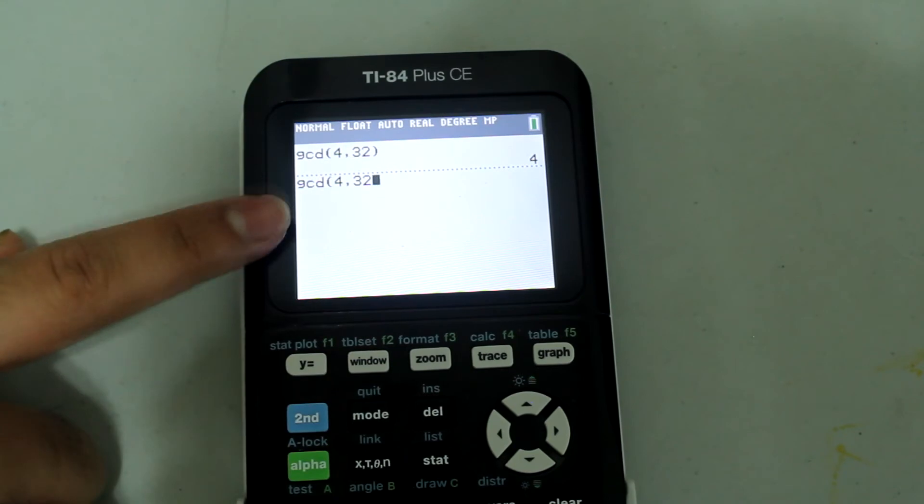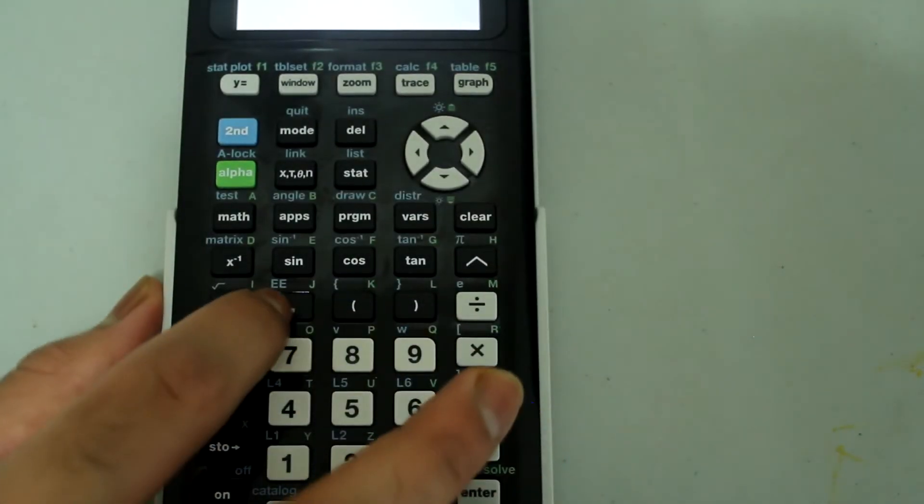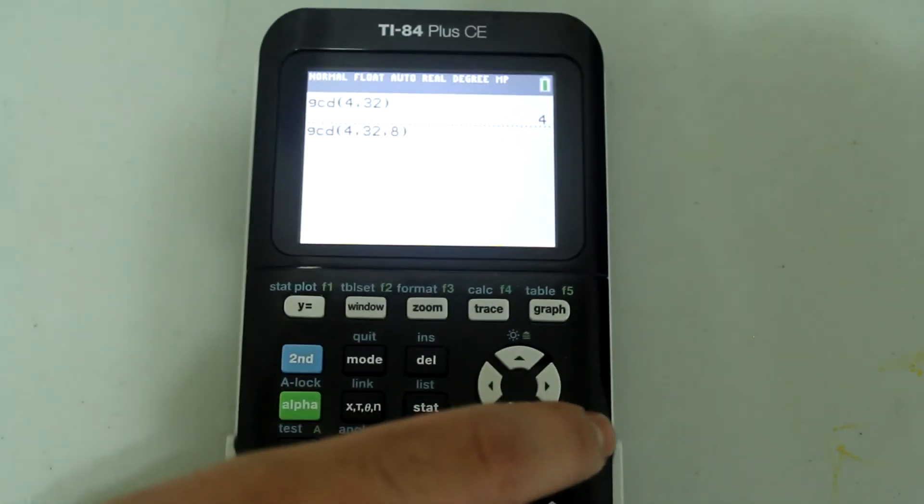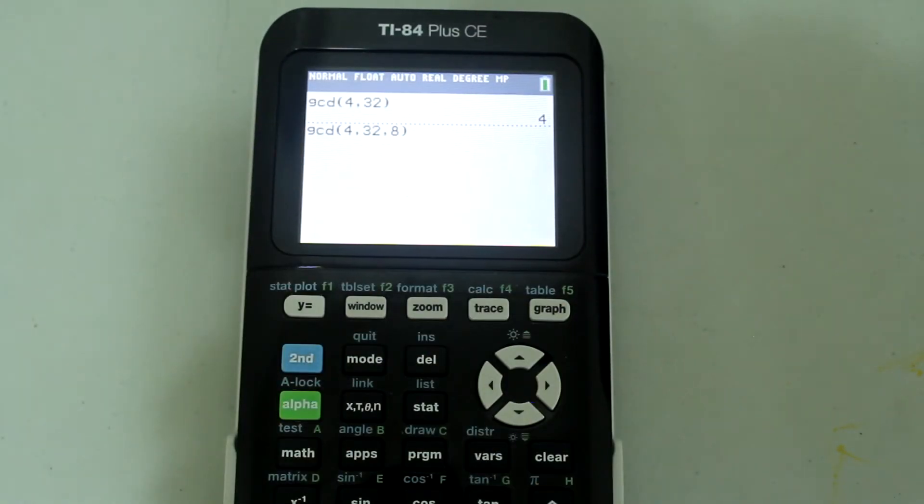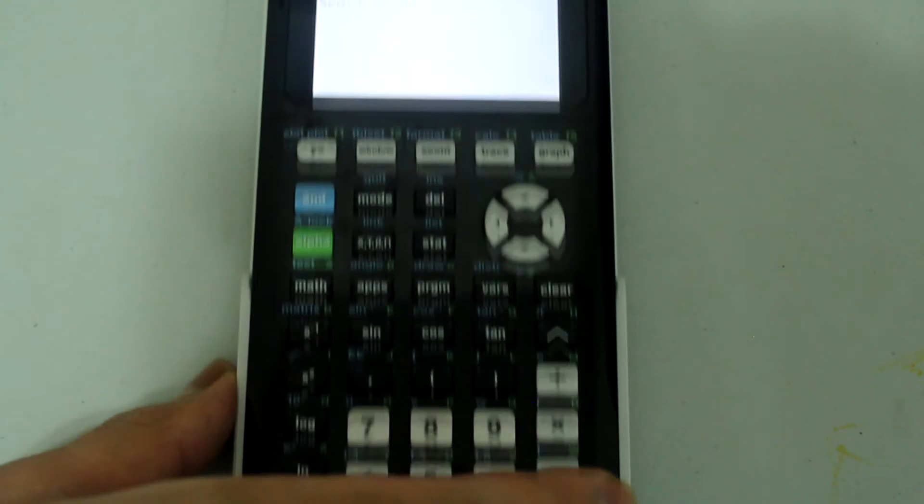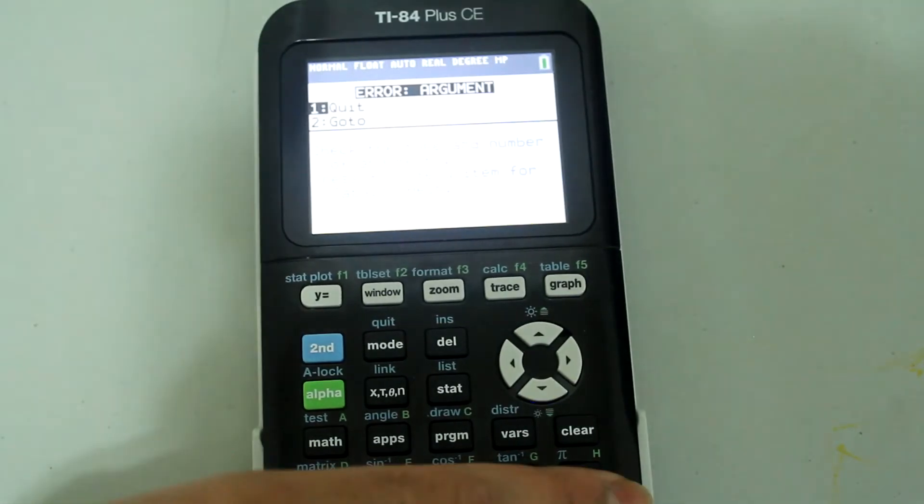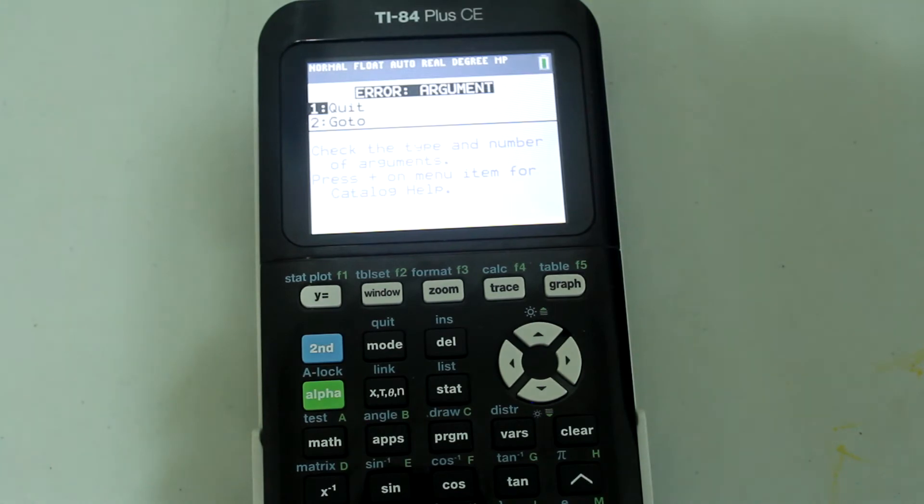I'm just going to delete the parenthesis and insert another comma and then 8 and then close the parenthesis. So the entry looks like this now: GCD 4 comma 32 comma 8 with the parenthesis closed. Now if I press enter, I get an error message. That's because you can only have two entries inside the GCD command.